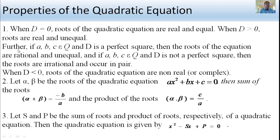Further, if a, b, c belong to Q and D is a perfect square, then the roots are rational and unequal. If a, b, c belong to Q and D is not a perfect square, then the roots are irrational and occur in conjugate pairs.